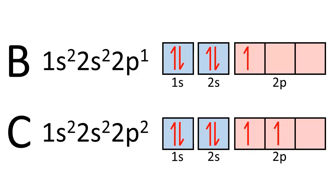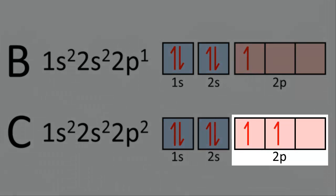The electron configurations for boron and carbon are 1s² 2s² 2p¹ and 1s² 2s² 2p² respectively. Notice the orbital diagram for carbon — the two 2p electrons are in separate orbitals with the same spin orientation.